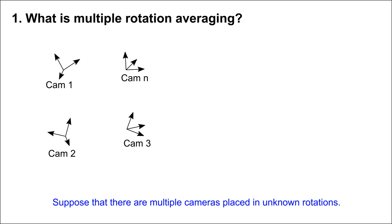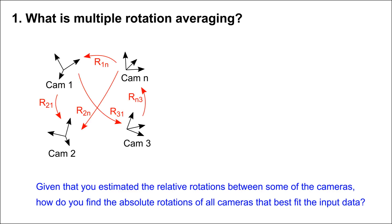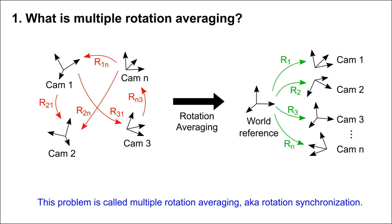Suppose that there are multiple cameras placed in unknown rotations. Given that you estimated the relative rotations between some of the cameras, how do you find the absolute rotations of all cameras that best fit the input data? This problem is called multiple rotation averaging, also known as rotation synchronization.